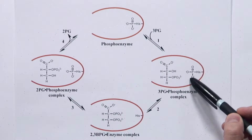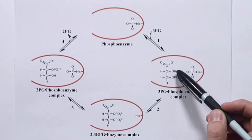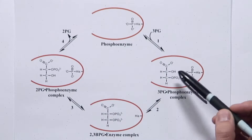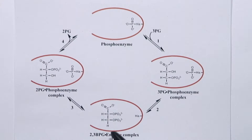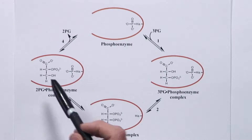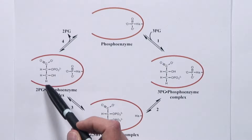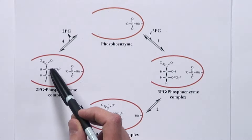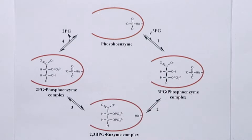The enzyme transfers this phosphate group onto the 2-position, the 2-hydroxyl of the 3-phosphoglycerate, to generate the 2,3-bisphosphoglycerate. Then the phosphate at the 3-position is transferred to the histidine to generate the product of the reaction, 2-phosphoglycerate, and regenerate the phosphoenzyme.